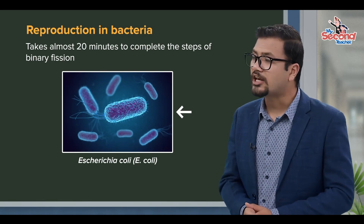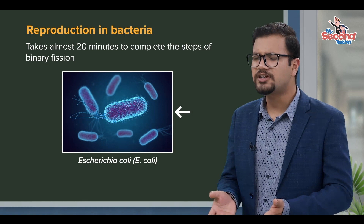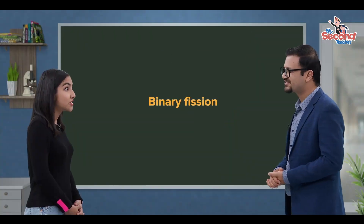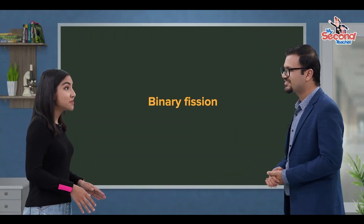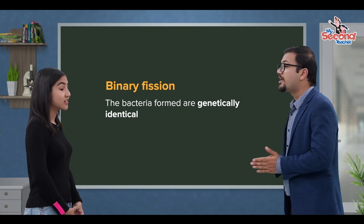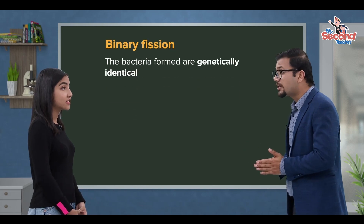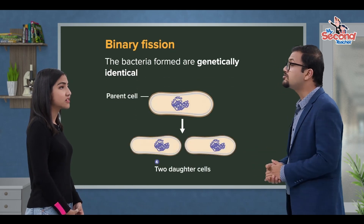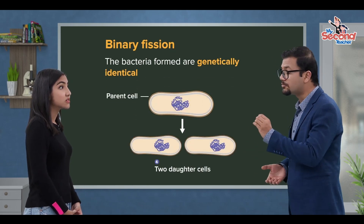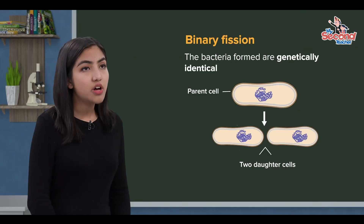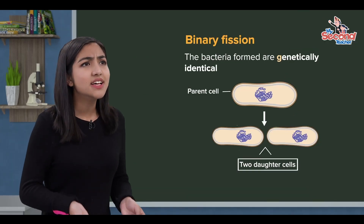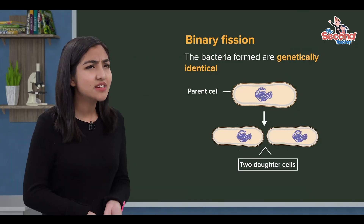It takes about 20 minutes for E. coli to complete binary fission. In binary fission, the resulting bacteria are genetically identical to each other and to the parent cell.